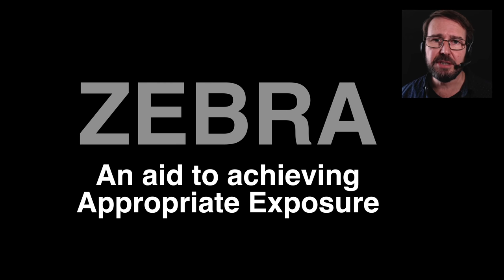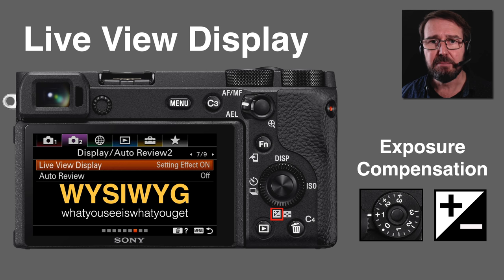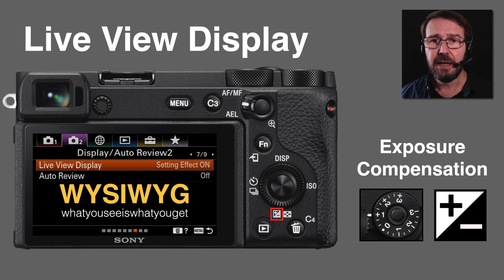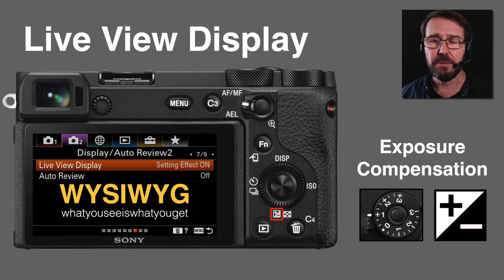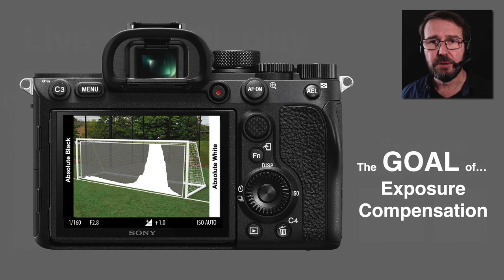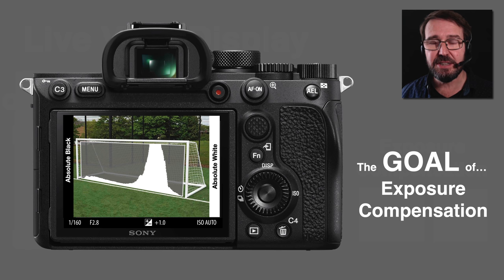The Zebra feature can be used as an aid for choosing the appropriate exposure. The fact that we are using mirrorless cameras is already an aid to choosing appropriate exposure because we get a what-you-see-is-what-you-get view, and often we can choose to shoot with a live histogram. This can enable us to use exposure compensation when required, basically lowering or increasing the exposure from what the meter has chosen. The goal for choosing appropriate exposure is getting all of the shadows and highlights within the dynamic range capabilities of the sensor.